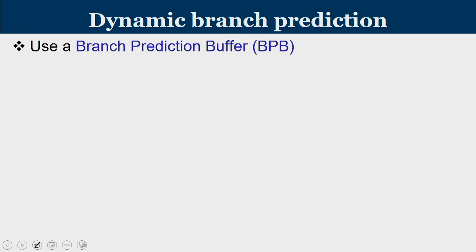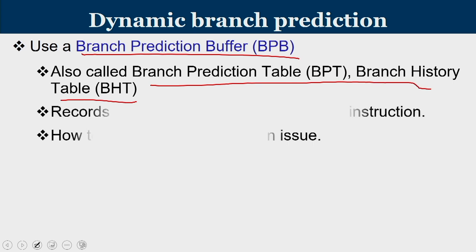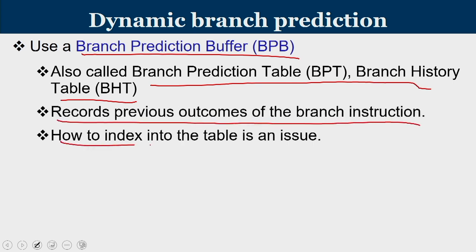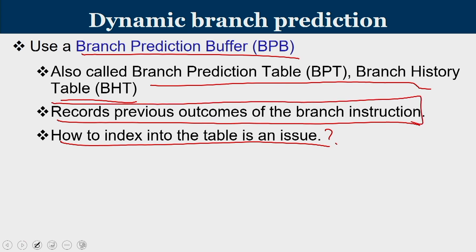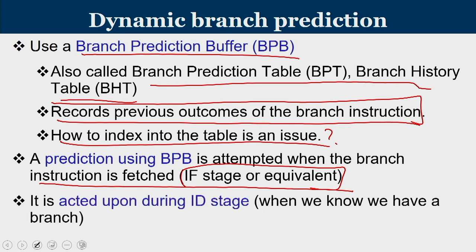Dynamic branch prediction — identifying branches on the fly during runtime — uses a branch prediction buffer (BPB), also known as a branch prediction table or branch history table. It records the previous outcomes of a branch instruction. Basically, it is a table recording whether a branch was taken or not taken in previous executions, including many prior outcomes. A prediction using the branch prediction buffer is attempted when the branch instruction is fetched. The moment we understand an instruction is a branch — by specific encoding patterns in certain bits — we make use of entries in the branch prediction buffer.